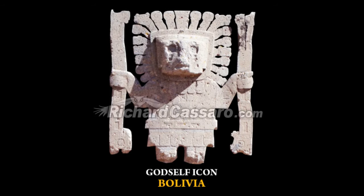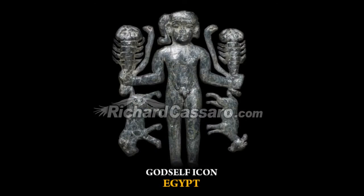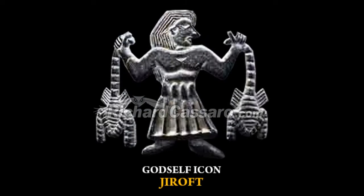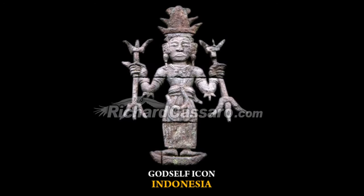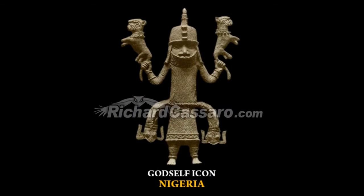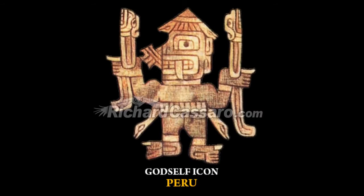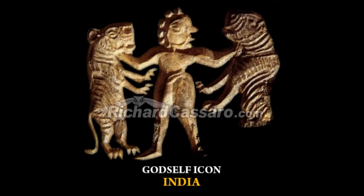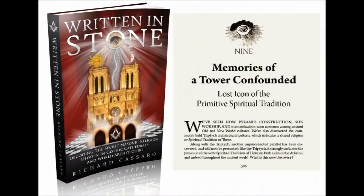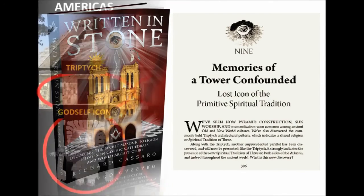The God Self Icon depicts a human or human-like figure facing forward, holding twin objects symmetrically in each hand. These objects are usually staffs or animals, sometimes serpents. In my 2011 book, Written in Stone, I included a chapter announcing my discovery of the God Self Icon.